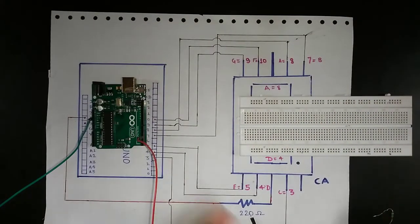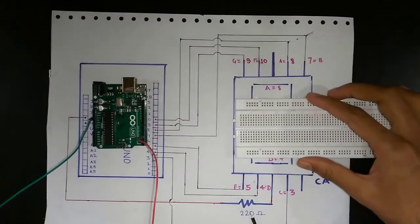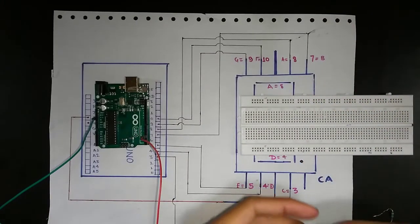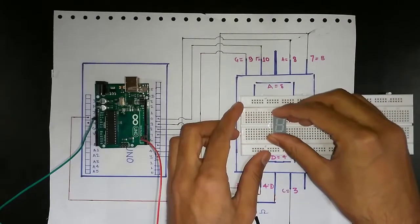Now let us implement this circuit. Take a breadboard, mount the 7-segment display on the breadboard.